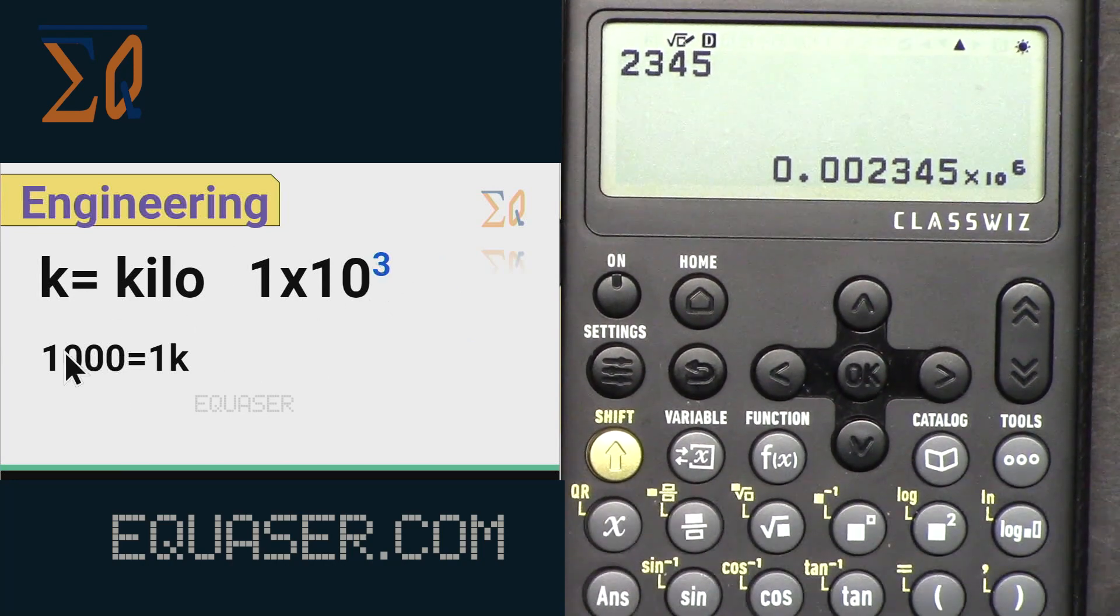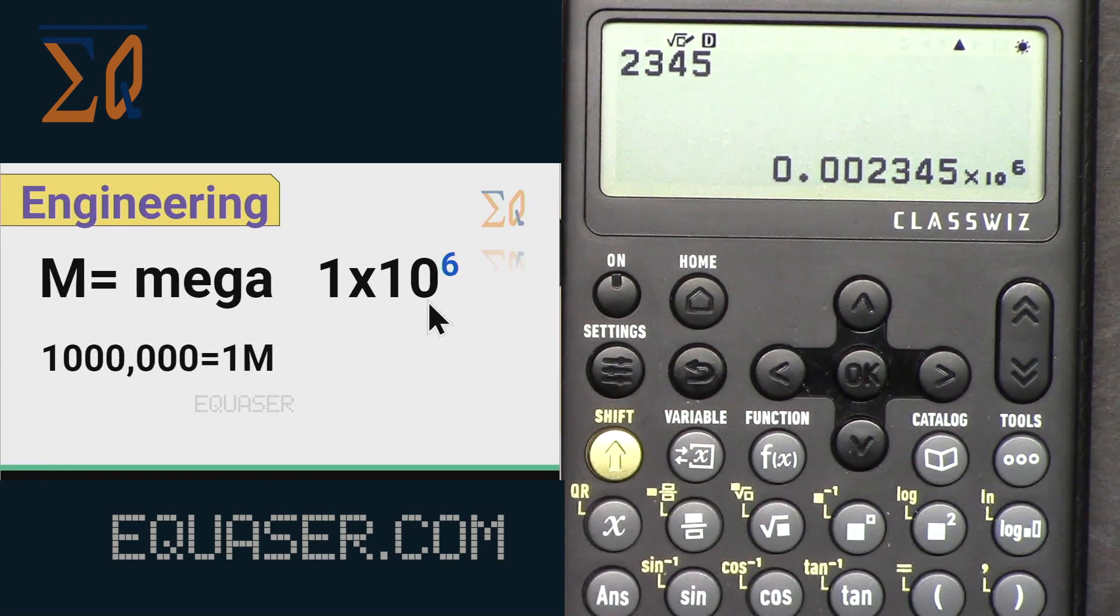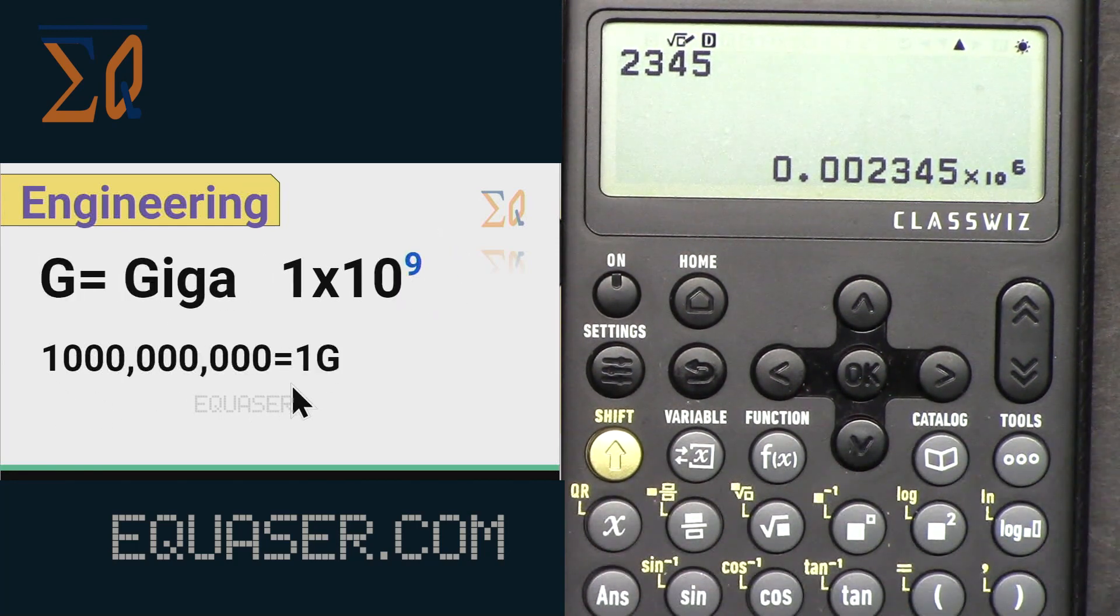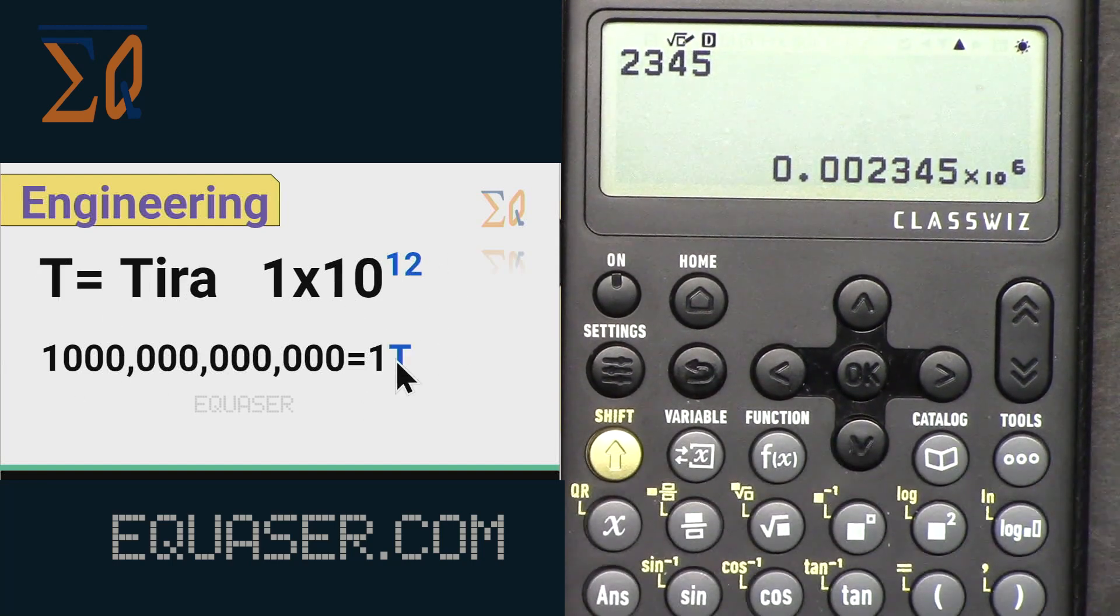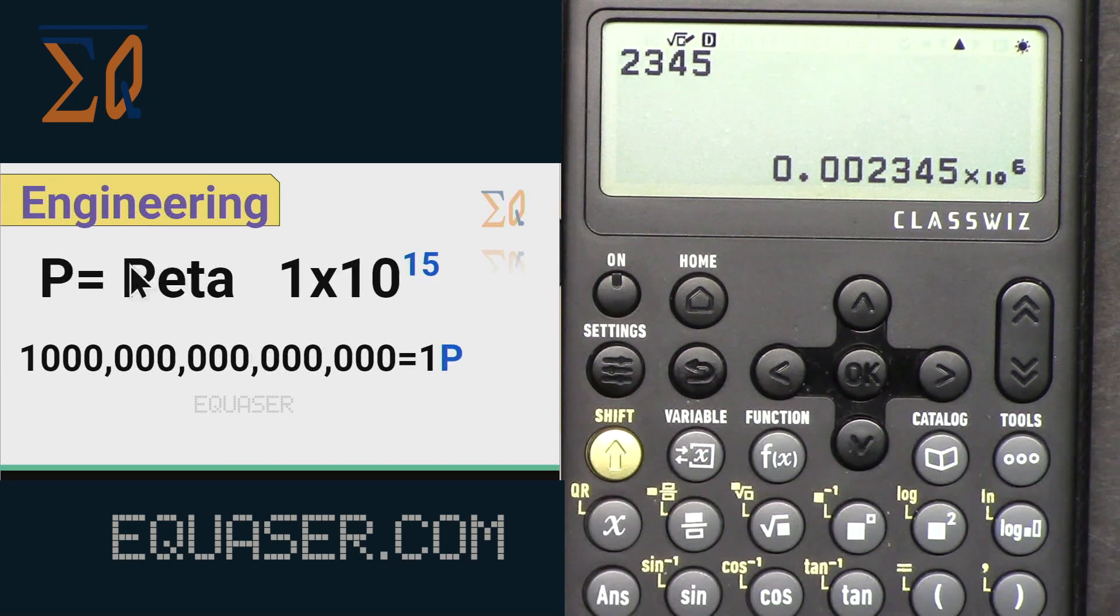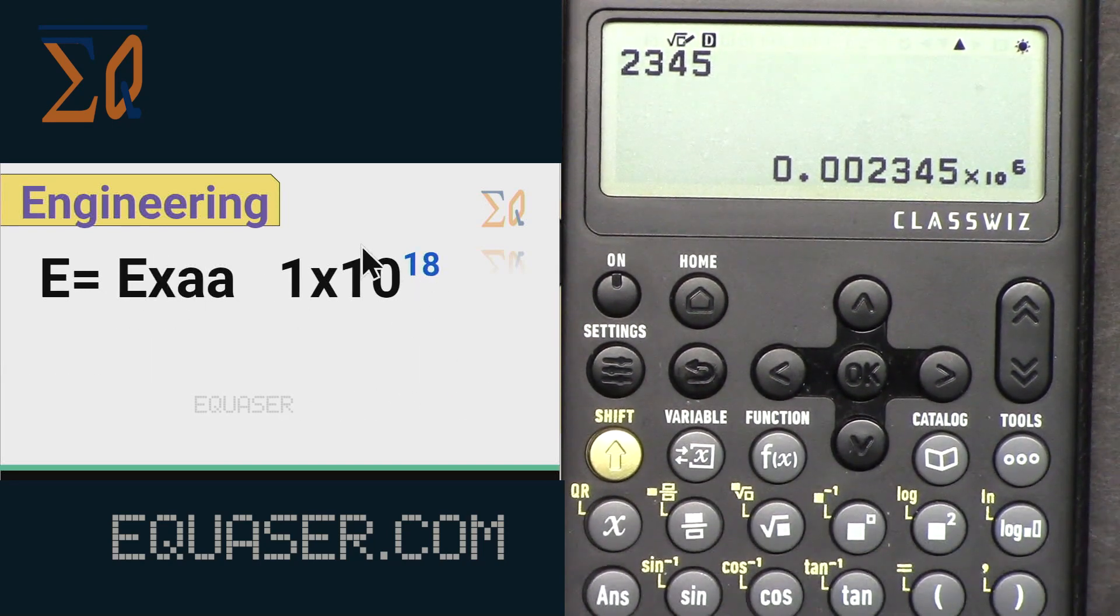Kilo is 1 times 10 to the power 3, that doesn't have minus, which means 1000 kilo. And then mega is to the power 6, which is 1 million, and then giga is 1 billion to the power 9, and then tera to the power 12, and then peta to the power 15, and then exa 1 to the power 18. You can be used with this calculator.